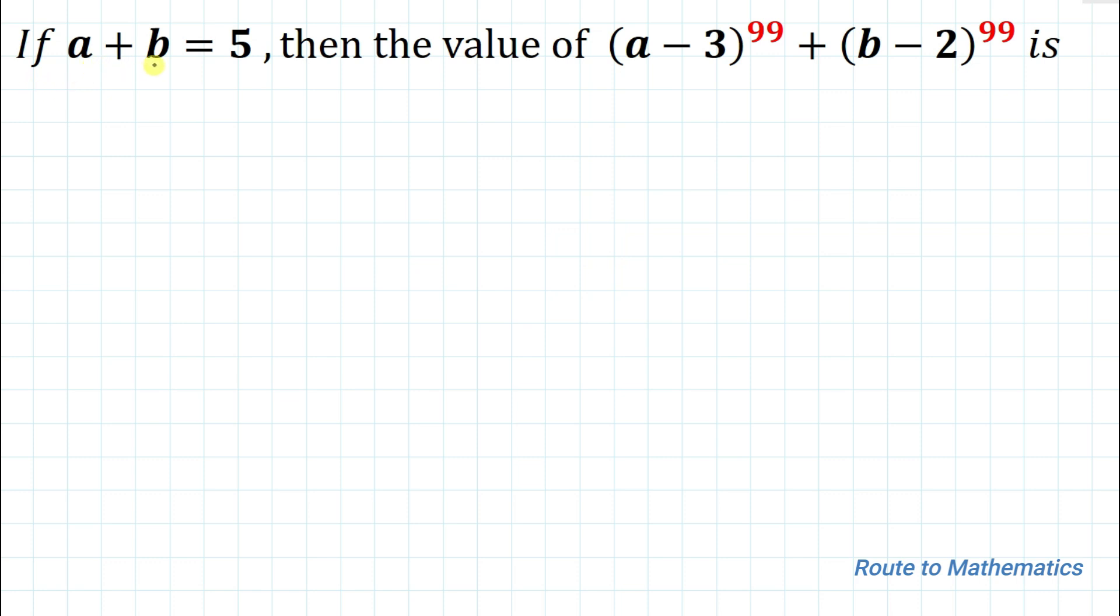The given question is: if a plus b equals 5, then the value of a minus 3 whole to the power 99 plus b minus 2 whole to the power 99 is. So here we have given an equation and we are asked to find the value of this given expression.